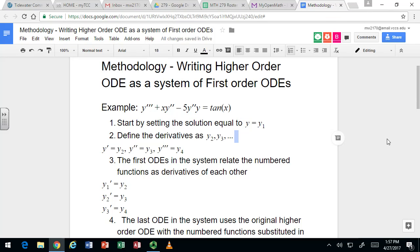So we're going to look at how to write a higher order ODE, degree 3 or higher, as a system of first order ODEs. In our example we have y triple prime plus xy double prime minus 5y double prime y equals tangent x.